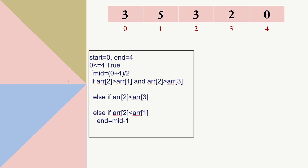To begin binary search, we need the condition start ≤ end. This is true the first time. We calculate mid = (start + end) / 2, giving us mid = 2. In the first if-condition, we check if the value at midpoint (which is 3) is greater than the element on its left (5) and also greater than the element on its right. The left comparison is false, so we jump to the next else-if condition.